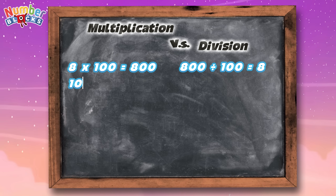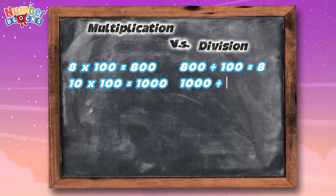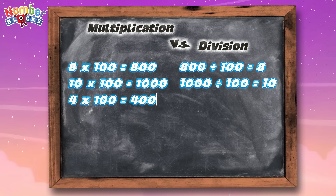Ten multiplied by one hundred is equal to one thousand. In division, one thousand divided by one hundred is equal to ten. Four multiplied by one hundred is equal to four hundred. In division, four hundred divided by one hundred is equal to four.